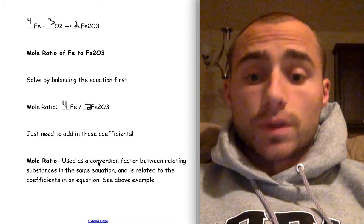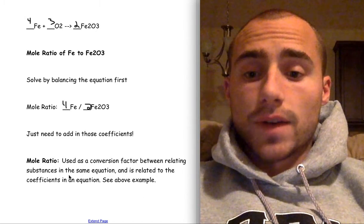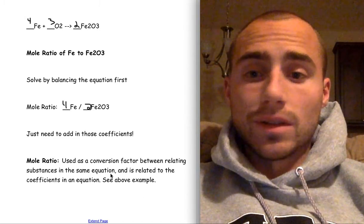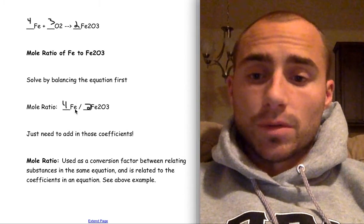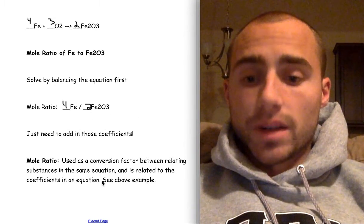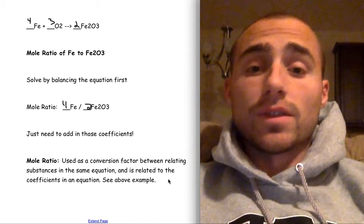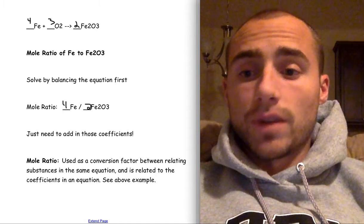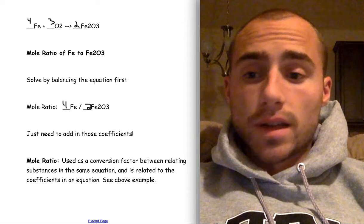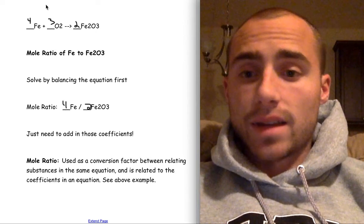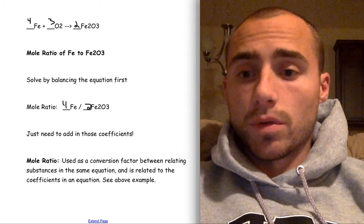A mole ratio, you're going to want to know what it's used for. So I'd take this down. Used as a conversion factor between relating substances in the same equation. Because we're relating iron and iron oxide. And it's also related to the coefficients in an equation. Just those two things is what a mole ratio is used for and how it works. So I would take that down. This is a good example of mole ratios.